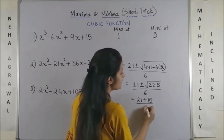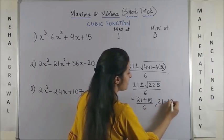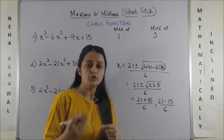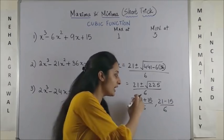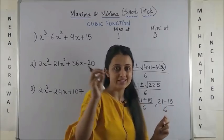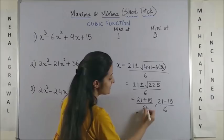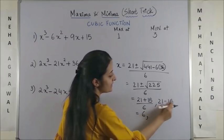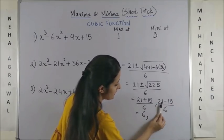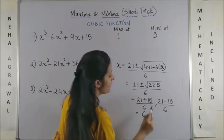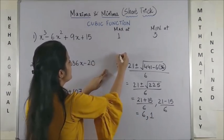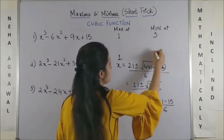So, 21 plus 15 by 6 and 21 minus 15 by 6. You know when you are quickly solving you don't have to show all these middle steps. So, here it will be 36 by 6 that's 6 and here it will be 6 by 6 which is 1. Obviously, 1 would give you the maximum and 6 would give you a minimum.